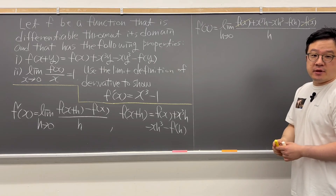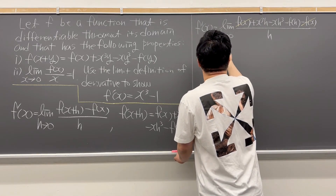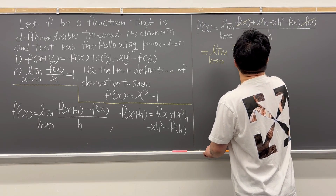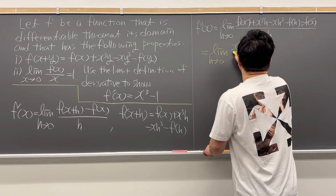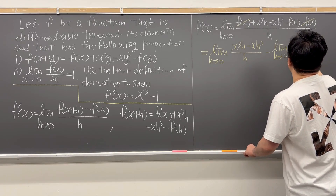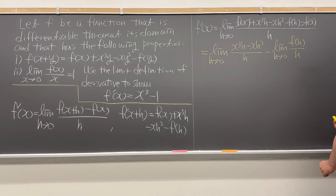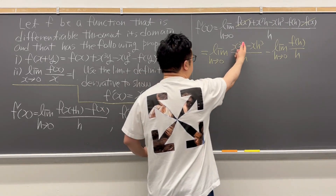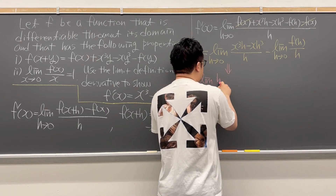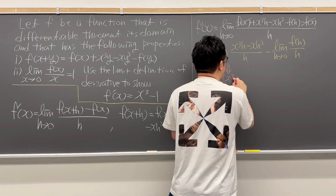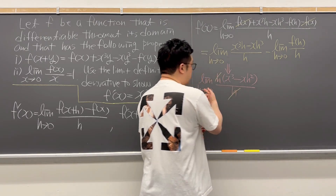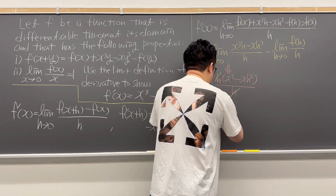We'll be separating this into two limits. We can rewrite this as the limit as h is going to zero of x cubed h minus x h cubed over h, minus another limit as h is going to zero of f of h over h. For the first limit, we can factor h out, giving the limit as h is going to zero of x cubed minus x h squared, divided by h. We cancel the two h's, and as h goes to zero, the first limit gives us x cubed.